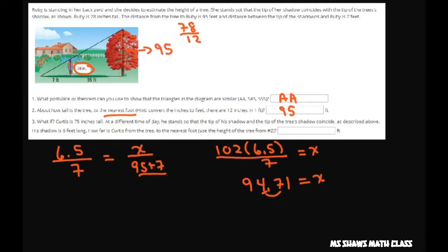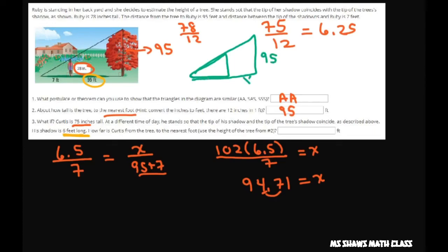Now we have Curtis who's 75, so 75 divided by 12, so again he's the same height, 75 divided by 12 equals 6.25. And now we want to find this. It's still 6 feet, so basically if you draw this triangle, there's your little triangle, here's your big triangle. This is 95, we're looking for this. This is going to be 6, this is going to be 6.25.